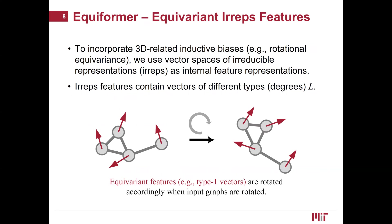Since we are modeling the behaviors of atoms in 3D space, it is important to consider 3D-related inductive biases such as rotational equivariance. For example, when we rotate a molecule, we want properties such as forces acting on each atom to be rotated accordingly. To incorporate such inductive biases, we use vector spaces of irreducible representations, or irreps, as internal feature representations. The irreps features contain vectors of different types; two common examples are scalars (type-0 vectors) and Euclidean vectors (type-1 vectors).